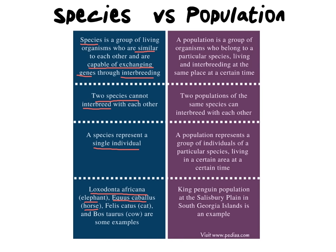A population is a group of organisms who belong to a particular species. What we're doing is taking all the individuals who are the same species and grouping them into populations. The next key fact is that they all need to be in the same place at a certain time. Two populations of the same species can interbreed with one another. For example, a population of African elephants in South Africa and a different population of African elephants in Kenya are the same species but two separate populations because they're living in two different locations.